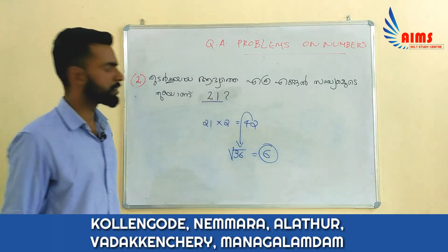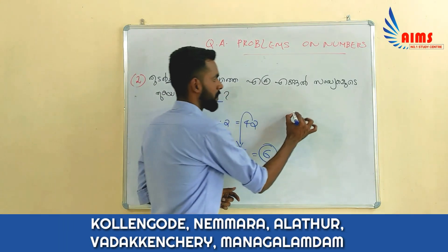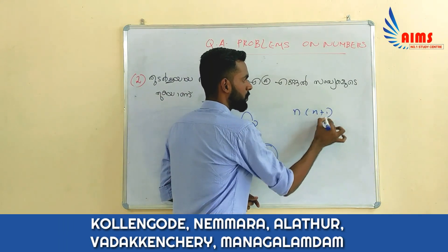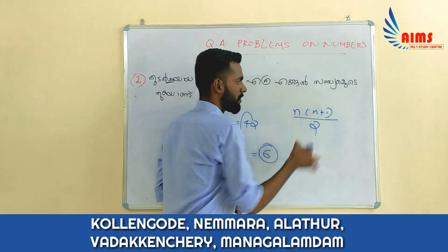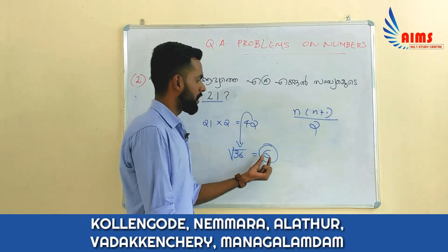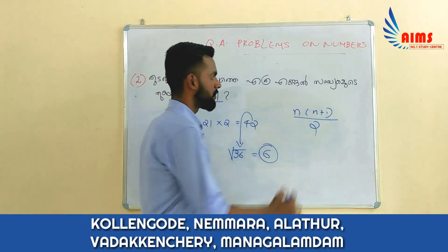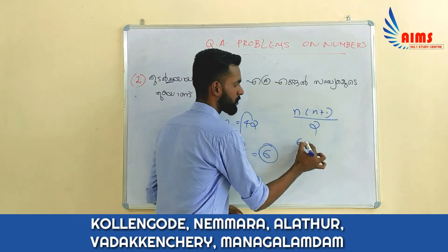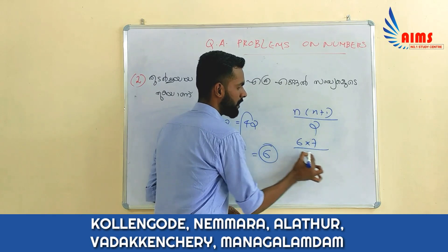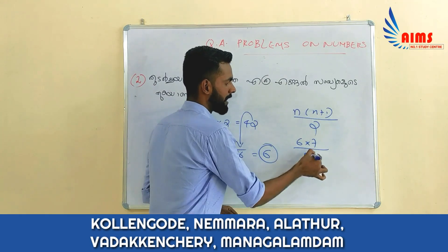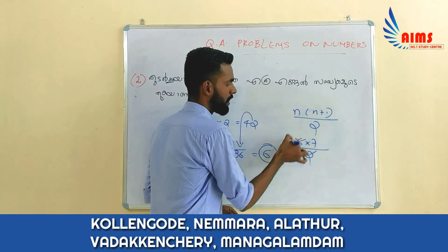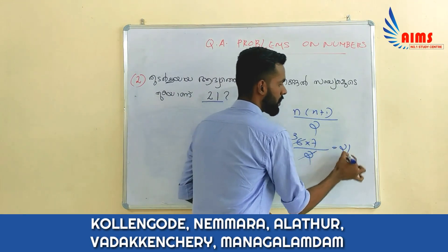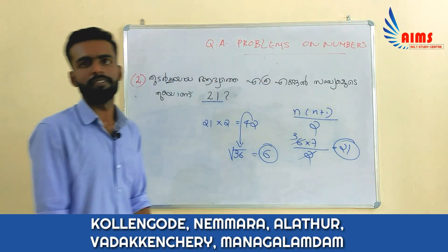Let's prove this. We have a sum of natural numbers. That's 6 into 7 divided by 2. If you cancel it, it's 3 into 7, which equals 21. That is the sum of 21.